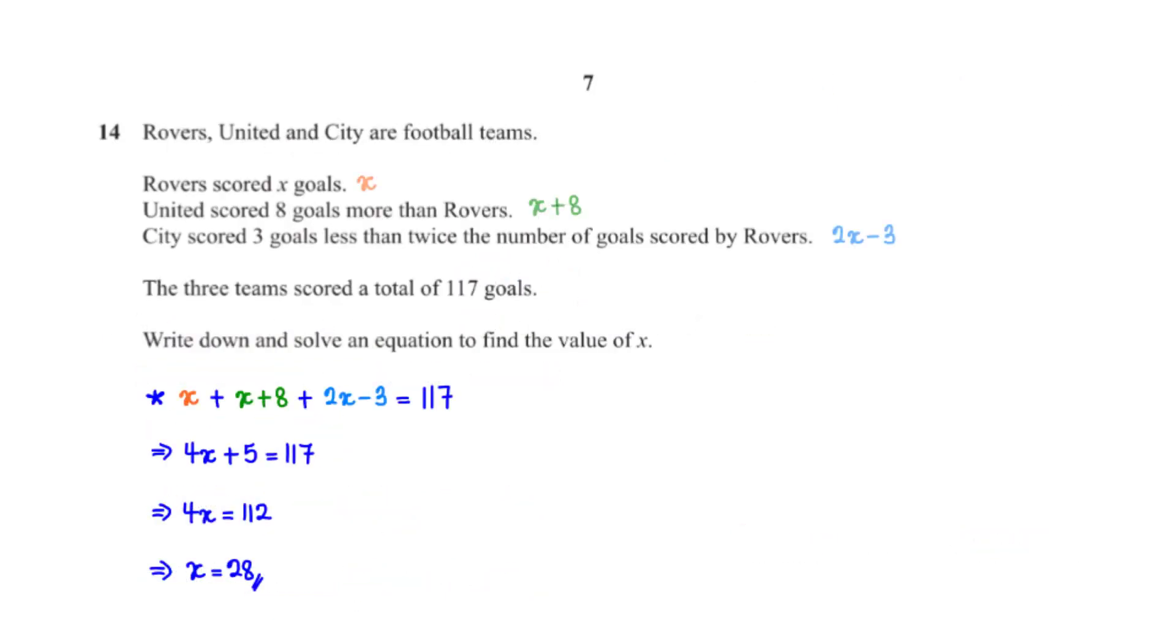Rovers, United and City are football teams. Write down and solve an equation to find the value of x. We are told Rovers scored x goals. Then, United scored 8 goals more than Rovers, which is x plus 8. And City scored 3 goals less than twice the number of goals scored by Rovers, which is 2x minus 3. We've also been told the three teams scored a total of 117 goals. So, we have x plus x plus 8 plus 2x minus 3 equals 117.